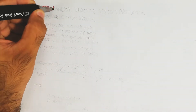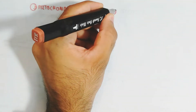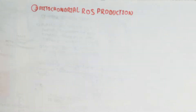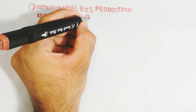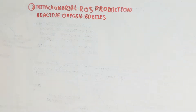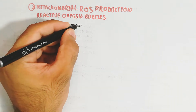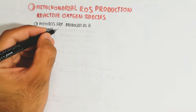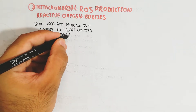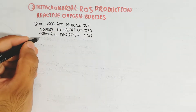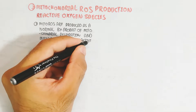In this video we will discuss mitochondrial reactive oxygen species production. Reactive oxygen species produced in the mitochondria can damage the whole cell and even whole tissue. Mitochondria produce ROS as a normal byproduct of mitochondrial respiration and metabolic enzymatic activity, but increased reactive oxygen species lead to stress.